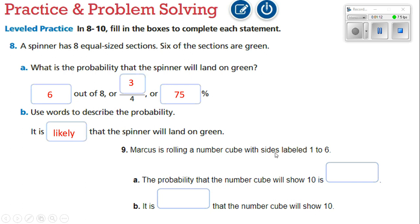Marcus is rolling a number cube with sides labeled one through six. The probability that the number cube will show 10 is what? Well, if the dice only has one through six, it's going to be impossible for it to show 10. So there's a 0% probability. It is impossible that the number cube will show 10. There's no way if you have a 0% chance of getting the number, that makes it impossible to roll that number.